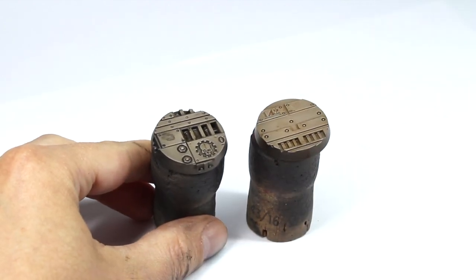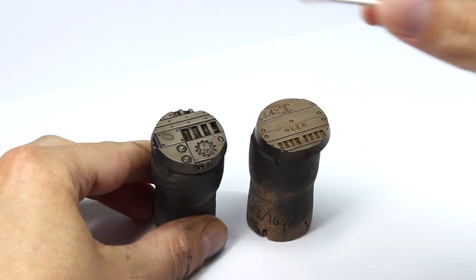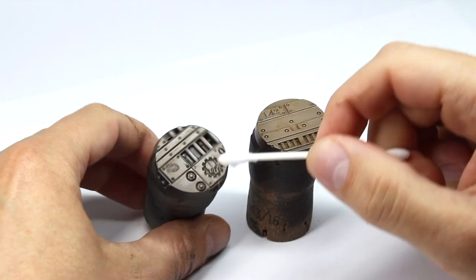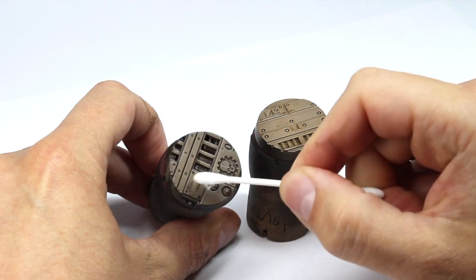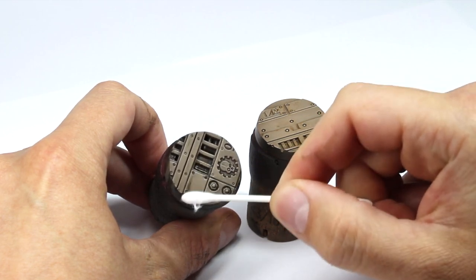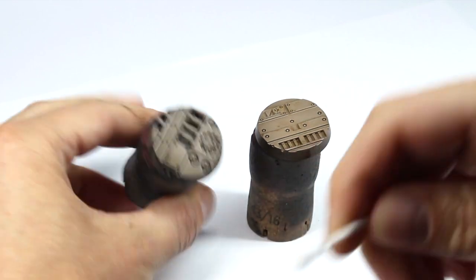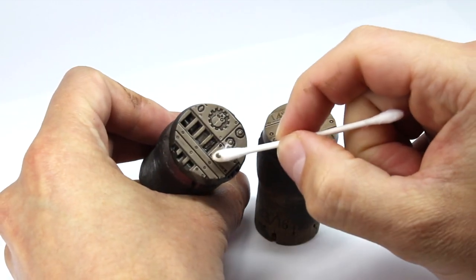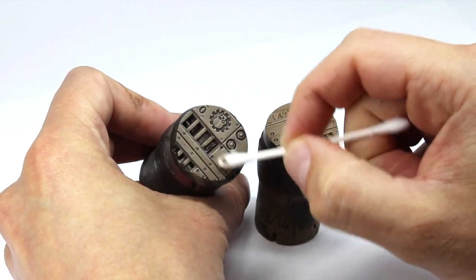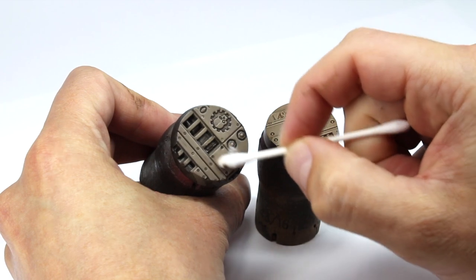All we need to do is put a tiny bit of the thinner that we used on our Q-tip and then gently wipe away at the surface. Take your time with this and be gentle, because if you work too hard in the area, you can rub through the gloss varnish and damage the paintwork beneath it.